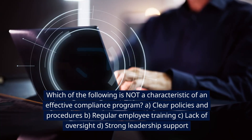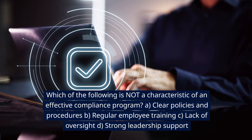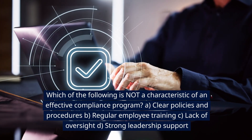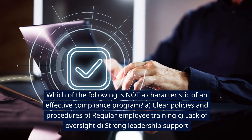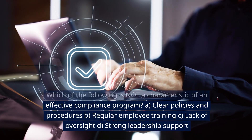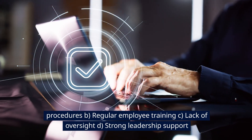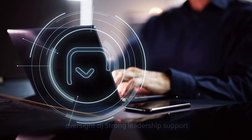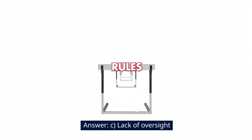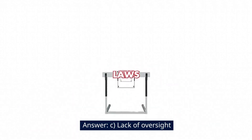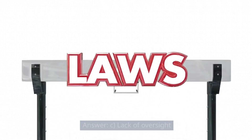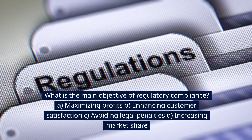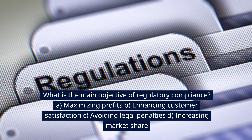Which of the following is not a characteristic of an effective compliance program? A. Clear policies and procedures. B. Regular employee training. C. Lack of oversight. D. Strong leadership support. Answer: C. Lack of oversight.